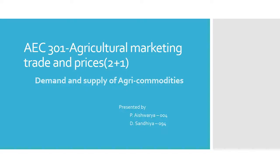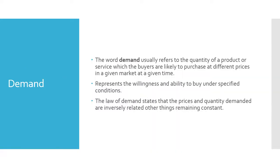Hello everyone, myself Sandhya and my teammate Aishwarya are going to present on the topic of demand and supply of agri commodities. Demand refers to the quantity of a product or service which buyers are likely to purchase at different prices in a given market at a given time. It is the willingness and ability of a person to buy the product under specified conditions. The law of demand states that price and quantity demanded are always inversely proportional.